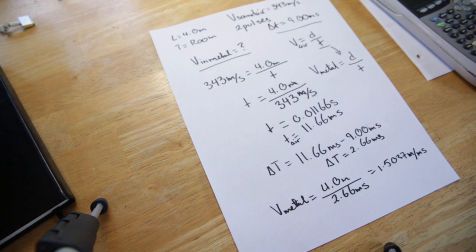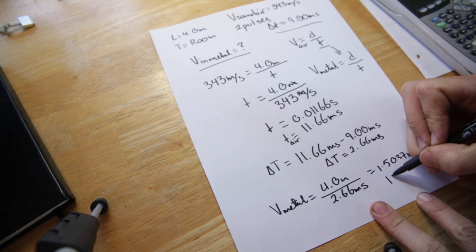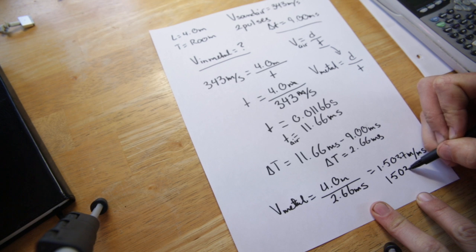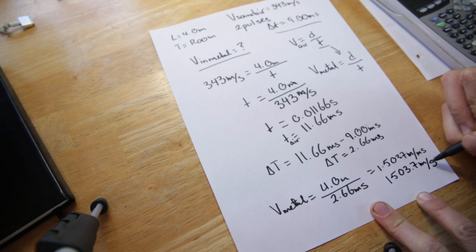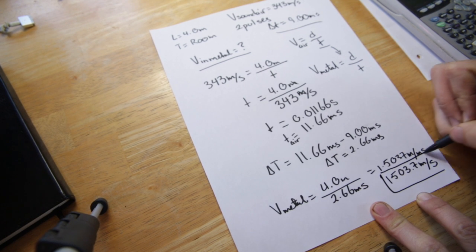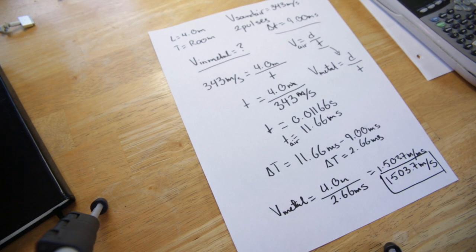Which can be converted to 1503.7 meters per second. And that is how fast our wave is traveling in the metal.